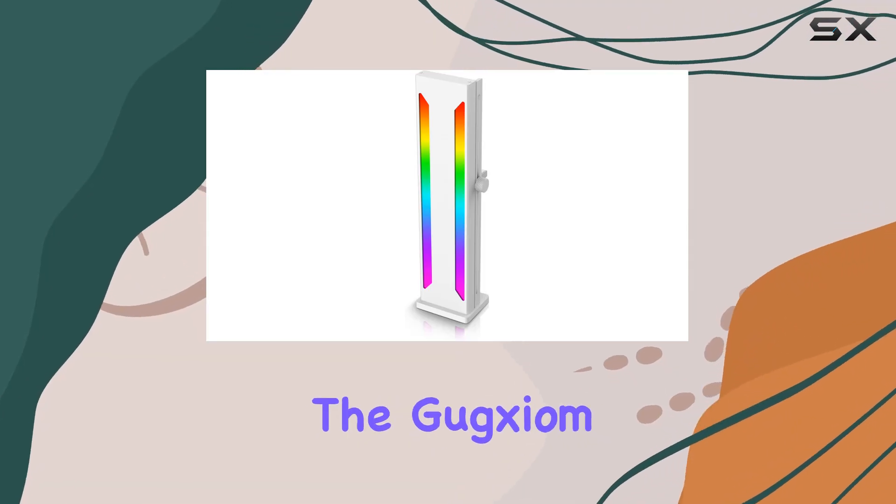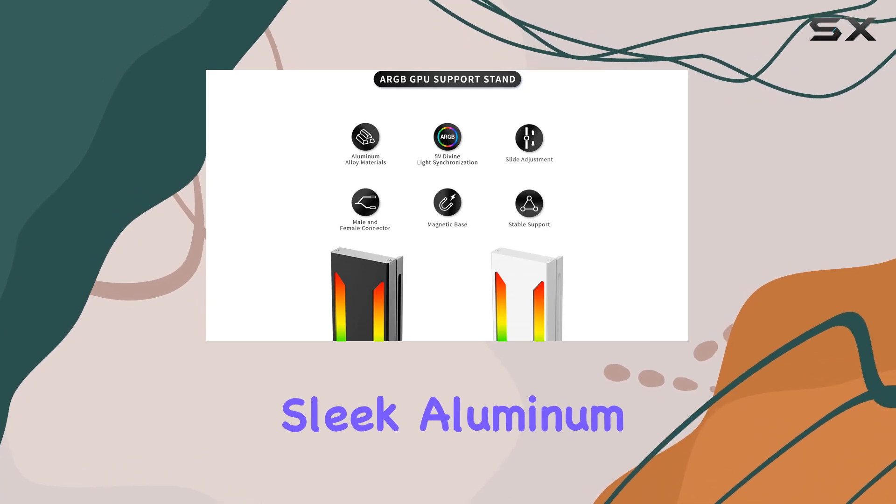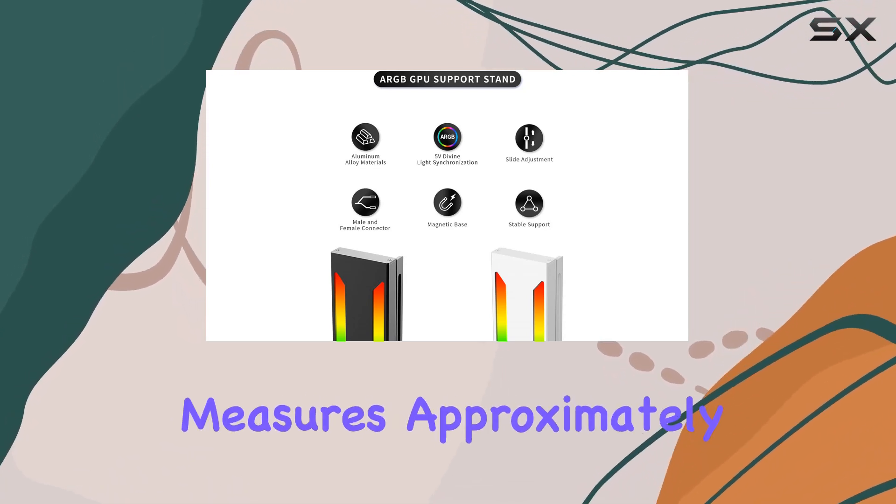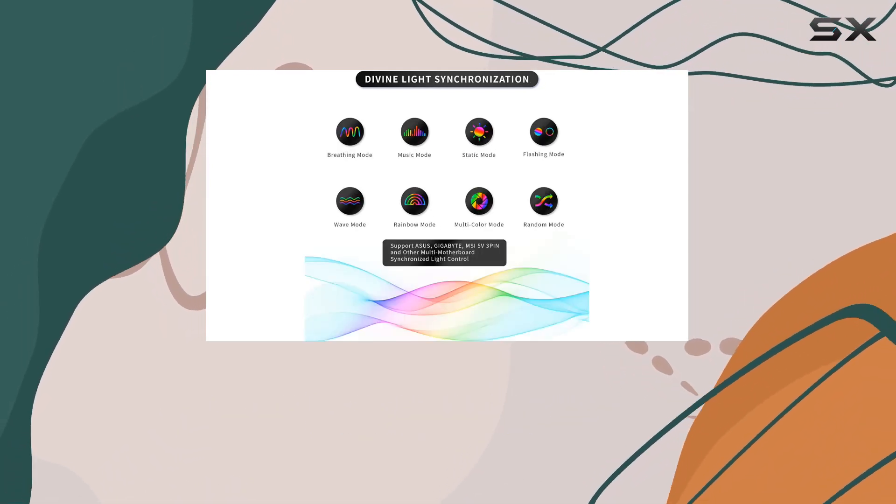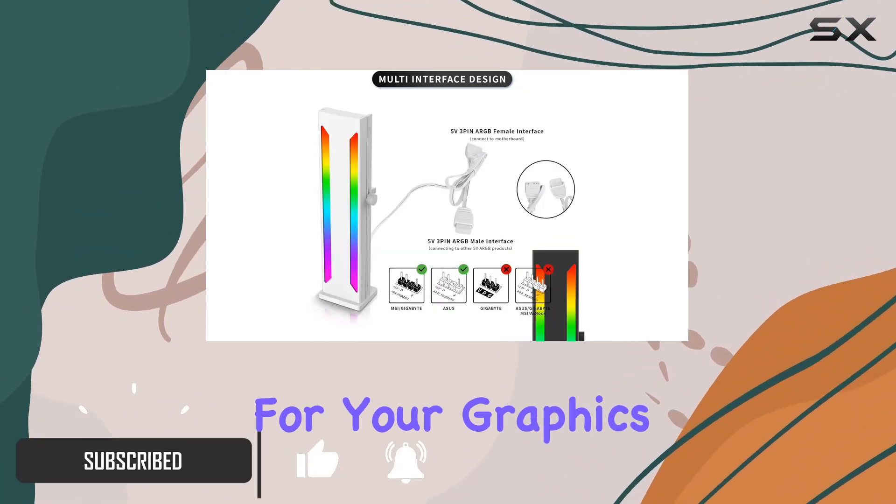Today, we're diving into the Guxium Adjustable ARGB GPU Support Bracket. This sleek aluminum alloy bracket measures approximately 7.1 inches in length and 1.7 inches in width, offering robust support for your graphics card.